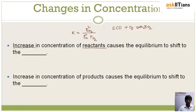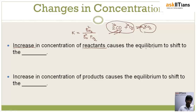So if I increase the concentration of carbon monoxide and oxygen — the reactants — where will the equilibrium shift? I am applying a stress on the reactant side. In order to offset this stress, that means in order to consume the extra amount of reactant added, I need to form more product, so the equilibrium will shift to the right, towards the product side.